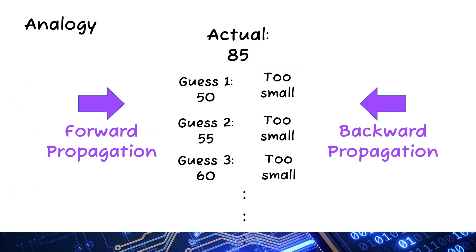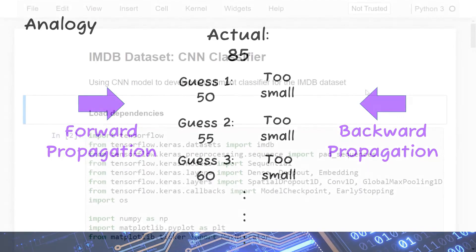Here is an analogy: an algorithm needs to predict the number 85. It starts with a guess of 50 (forward propagation). The difference means the guess is too small, so in backward propagation the weights and biases are adjusted to make the next guess slightly bigger — say 55. The amount of adjustment is called the learning rate. A higher learning rate converges faster but can overshoot. Over repeated iterations, the algorithm arrives at the correct prediction.